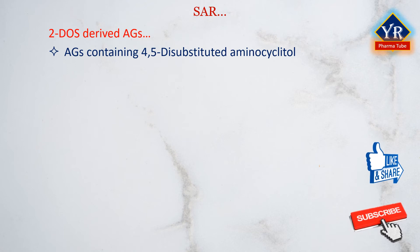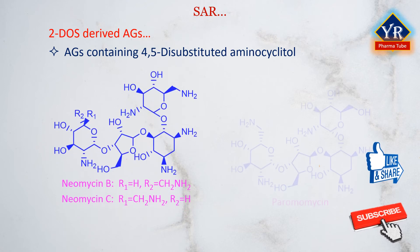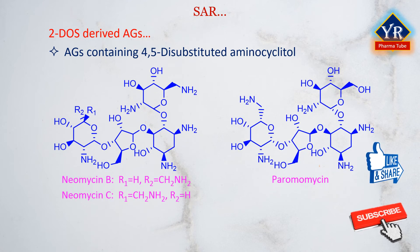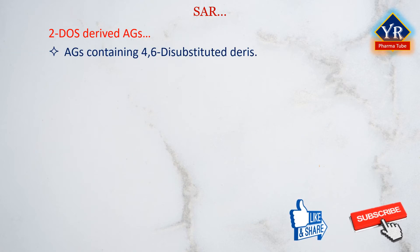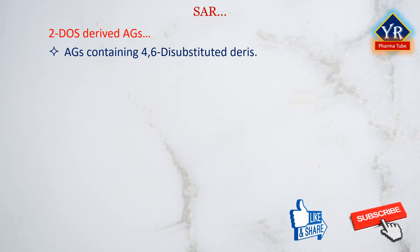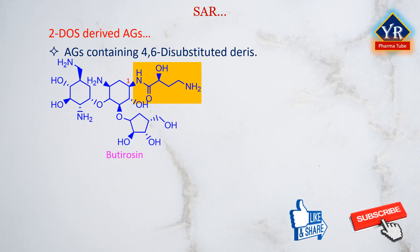Some aminoglycosides contain a 4,5-disubstituted aminocyclitol nucleus, for example the neomycins and the paromomycins. These compounds contain a different glycosidic scaffolding from that of the 4,6-disubstituted aminoglycosides. A ribose sugar emanates from the C5 position of the 2-deoxystreptamine nucleus and usually contains a sugar substituent joined by way of a glycosidic linkage. In addition, the C6 hydroxyl center of the 2-deoxystreptamine core is unsubstituted. As with other aminoglycosides, there exist key amine and hydroxyl groups that are crucial for antibacterial activity.